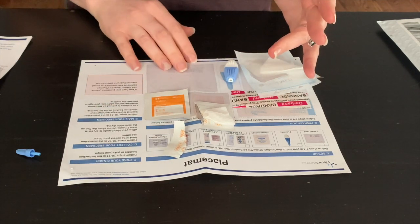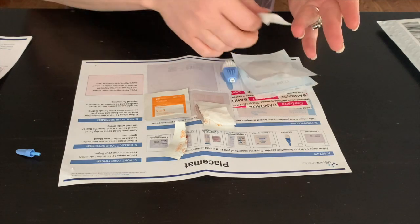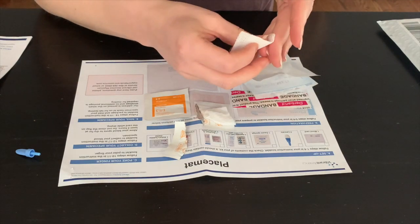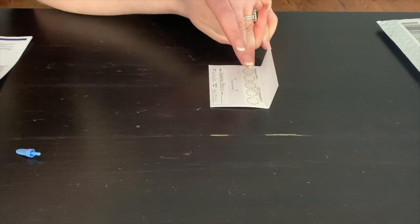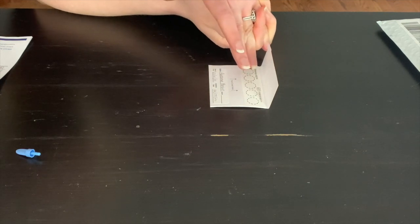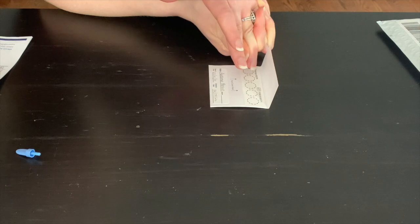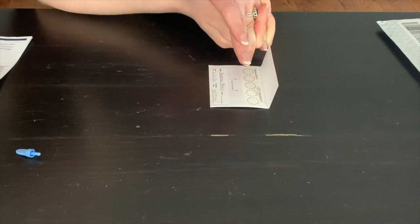Wipe the first drop of blood away with the gauze pad. Milk your finger from base to tip to produce more blood. Allow a drop of blood to form. Let the blood drop fall from your fingertip into the collection circle.